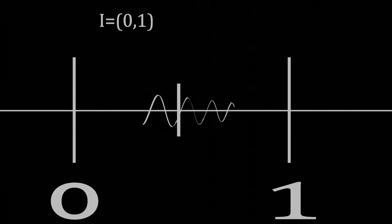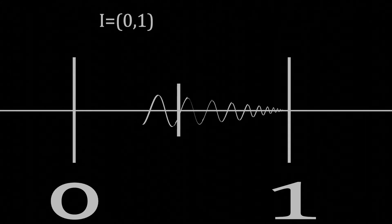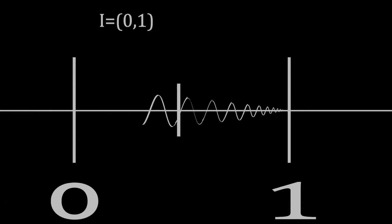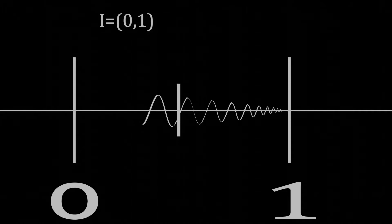Let's consider the open interval of rational numbers between 0 and 1. There is no maximum element, and the elements in the interval keep increasing without reaching a maximum number. However, there is a supremum, which is 1.